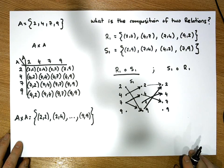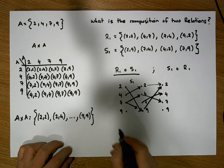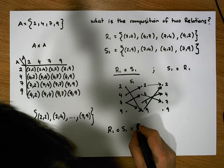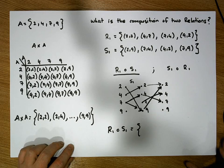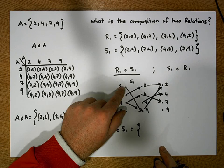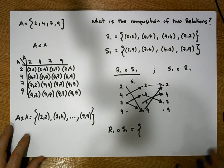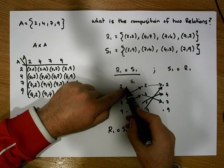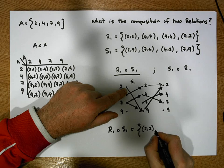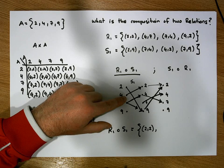This is what the graph of the composition looks like. For the relation R1 after S1, we take each value with an outgoing edge and follow it through to the final range. We can see that 2 is taken to 9 and then 9 goes up to 2, so 2 maps directly to 2. There's no other outgoing edge from 2, so we move on.